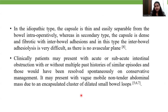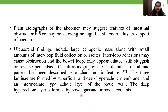Clinically, patients may present with acute or sub-acute intestinal obstruction with or without multiple past histories of similar episodes that resolved on conservative management. It may present with a vague, mobile, non-tender abdominal mass due to an encapsulated cluster of dilated small bowel loops. On plain radiograph, there may be features suggestive of intestinal obstruction or no significant abnormalities. On ultrasound, a large echogenic mass along with small amounts of interloop fluid collection or ascites may be seen. Interloop adhesions may cause obstruction and the bowel loops may appear dilated with sluggish or reverse peristalsis. The trilaminar membrane pattern has been described as a characteristic feature on ultrasonography, formed by superficial and deep hyperechoic membrane and an intermediate hypoechoic layer of the bowel wall.